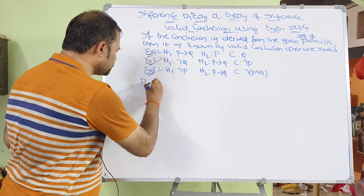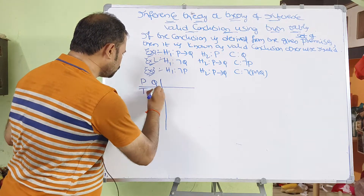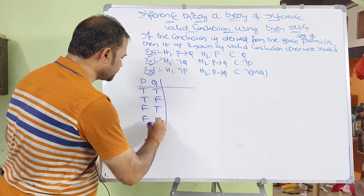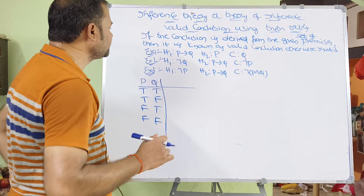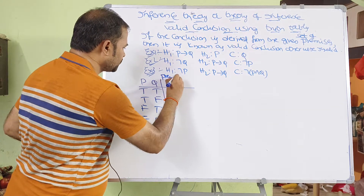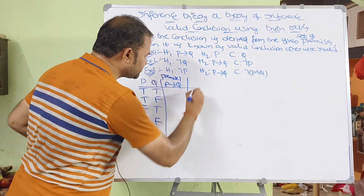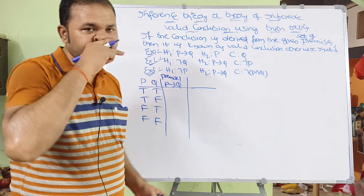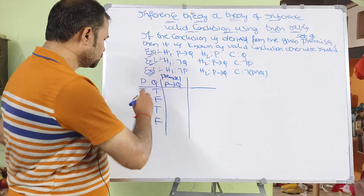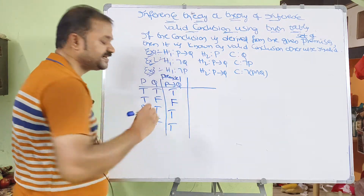We have two variables, so we will have four combinations: true-true, true-false, false-true, and false-false. Premise 1 is P implies Q. P implies Q returns false when P is true and Q is false; otherwise it returns true. So for true-false the result is false, and in the remaining three cases the result is true.